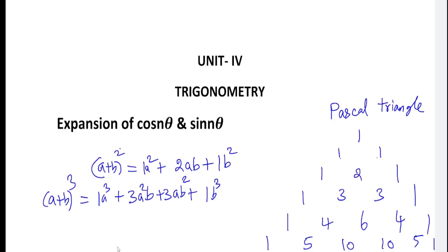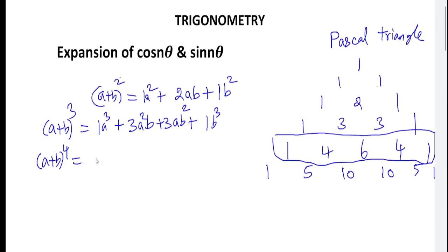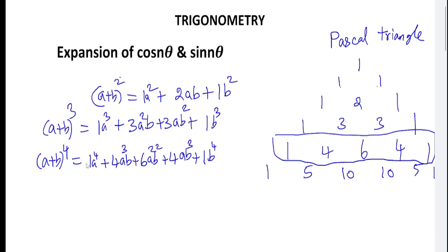Using Pascal's Triangle, if you don't know (a+b)⁴, go to the row 1-4-6-4-1. The powers of a start at 4 and decrease: a⁴, a³, a², a¹, a⁰. The powers of b start at 0 and increase to b⁴. Everything connected with plus signs. So this is the formula for (a+b)⁴.